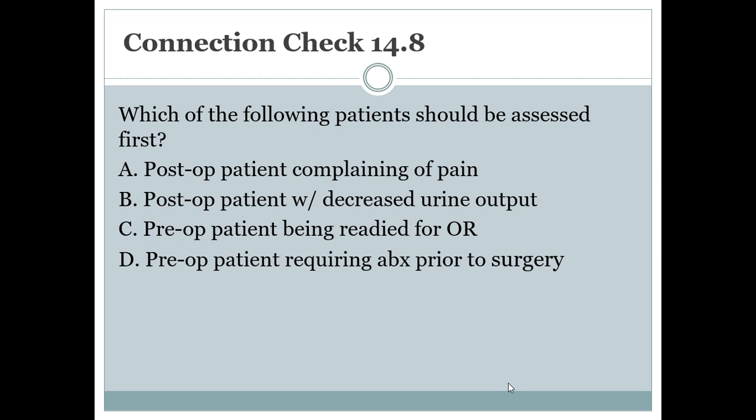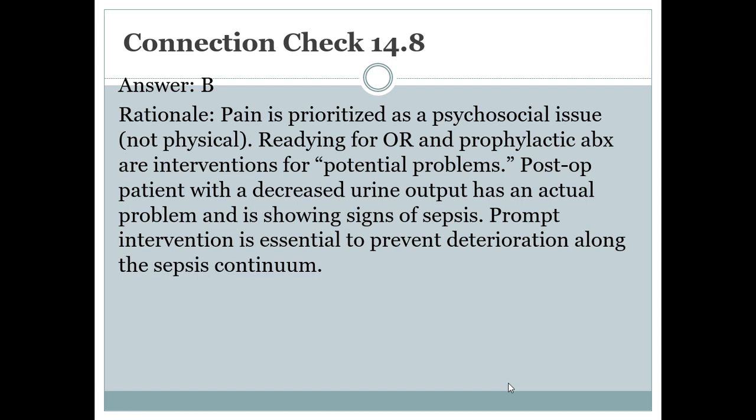Connection check: which of the following patients should be assessed first? A post-op patient complaining of pain, a post-op patient with decreased urine output, a pre-op patient being readied for the OR, or a pre-op patient requiring antibiotics prior to surgery? The answer is B. Pain is prioritized as a psychosocial issue. Readying for the OR and prophylactic antibiotics are interventions for potential problems. The post-op patient with decreased urine output has an actual problem and is showing early signs of sepsis, requiring prompt intervention.